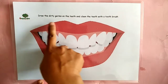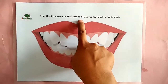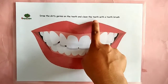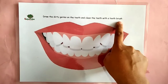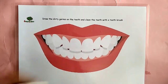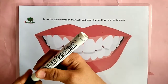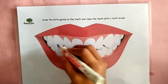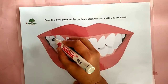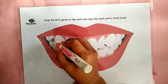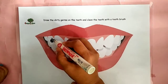Draw the dirty germs on the teeth and clean the teeth with a toothbrush. Take your marker and draw the germs. You can draw a circle or like a worm.